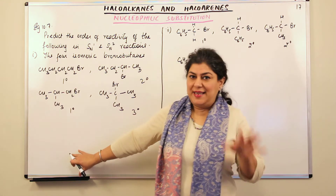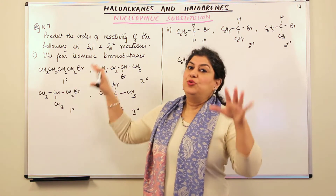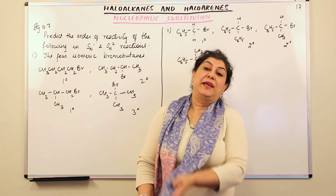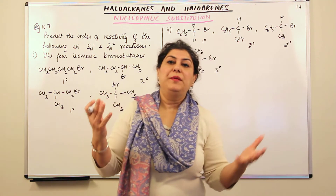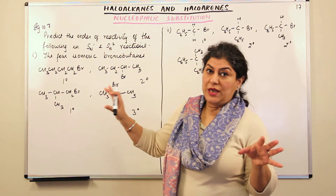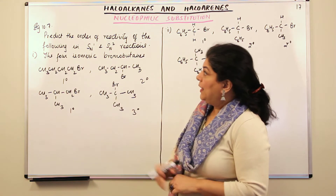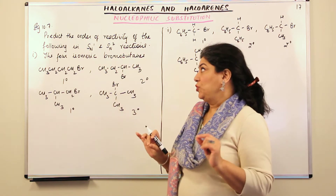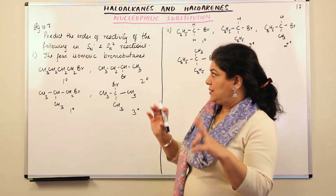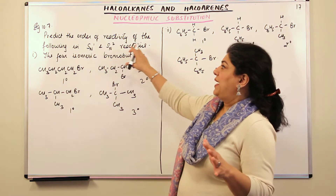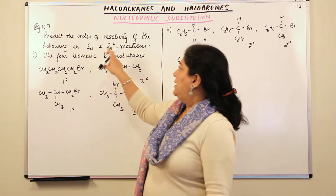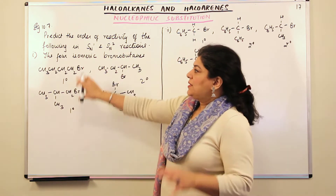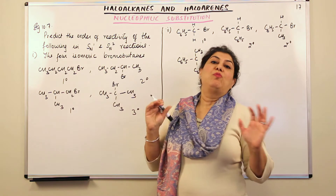So this is one question I saved on purpose, so that doing it now would make the steric hindrance concept very clear. This is Example 10.7 — the solved example from your textbook — and it has two parts. You have to predict the order of reactivity of the following reactions for both SN1 and SN2 mechanisms. The first part involves four isomeric bromobutanes.